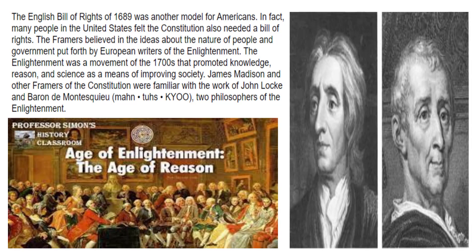The English Bill of Rights of 1689 was another model for Americans. In fact, many people in the United States felt the Constitution also needed a Bill of Rights. The framers believed in the ideas about the nature of people and government put forth by European writers of the Enlightenment. The Enlightenment was a movement of the 1700s that promoted knowledge, reason, and science as a means of improving society. James Madison and other framers were familiar with the work of John Locke and Baron de Montesquieu, two philosophers of the Enlightenment.